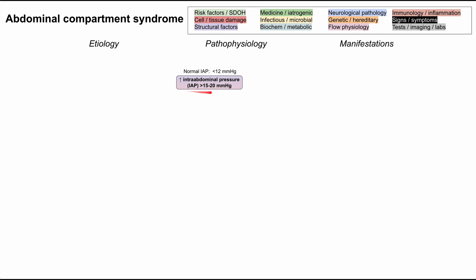Let's start with the central pathophysiology of abdominal compartment syndrome: increased intra-abdominal pressure, abbreviated as IAP. A normal IAP is below 12 millimeters of mercury. Increased intra-abdominal pressure occurs above 15 to 20 millimeters of mercury, and that's when you'll start to see symptoms — organ dysfunction and organ failure — affecting the many organ systems that pass through or nearby the intra-abdominal space.